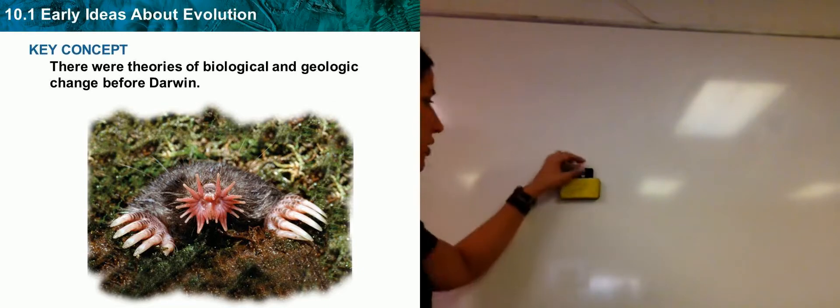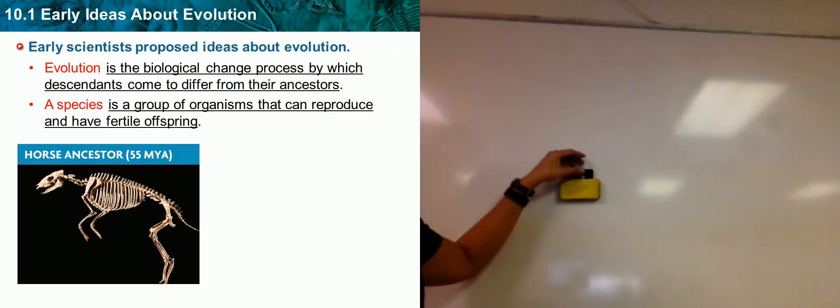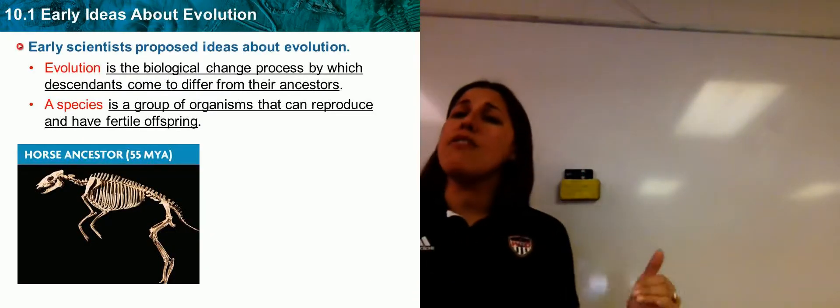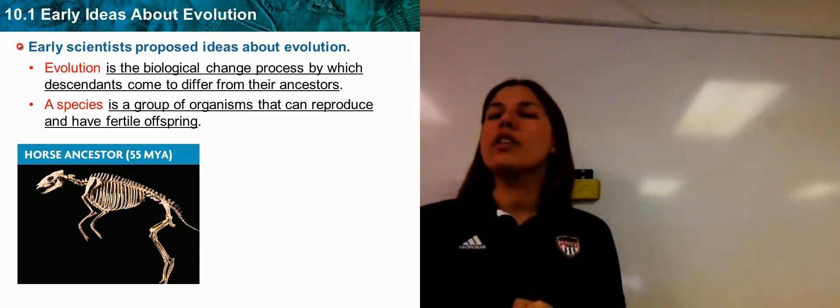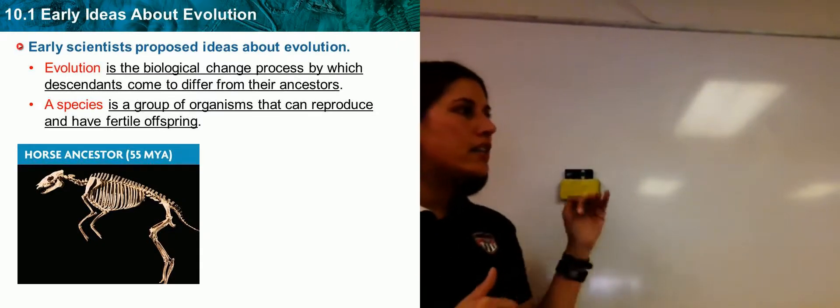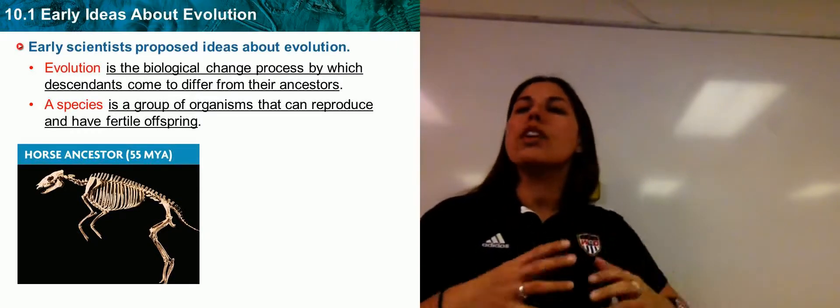To begin we're going to start at the very beginning. What is simple evolution? Simple evolution is just change over time. It's saying that in some set amount of time, organisms will change.